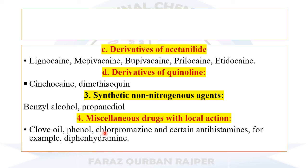Besides this, there are certain miscellaneous drugs which have local anesthetic effects. Examples are clove oil, phenol, chlorpromazine, and certain antihistamines — for example, diphenhydramine. This was about the classification of local anesthetics.